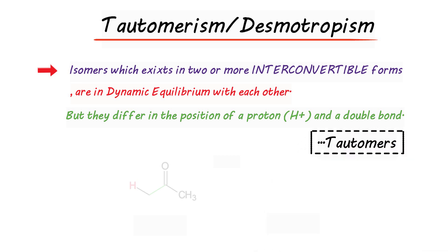For example, we have these two molecules. The first one is a keto form while the other one is an enol form. These two are in dynamic equilibrium with each other. Their conversion is catalyzed by either acid or base.